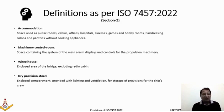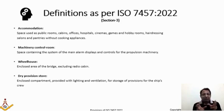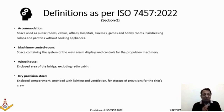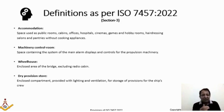The machinery control room is a space containing the system of main alarm displays and controls for the propulsional machinery — the propulsion and thruster system by which the ship moves forward, turns left, or right. The electrical panels for these thrusters are kept in one particular room — that is nothing but the machinery control room.